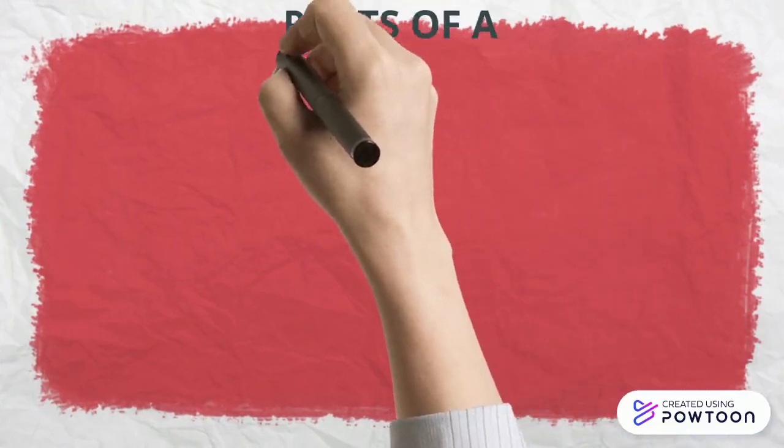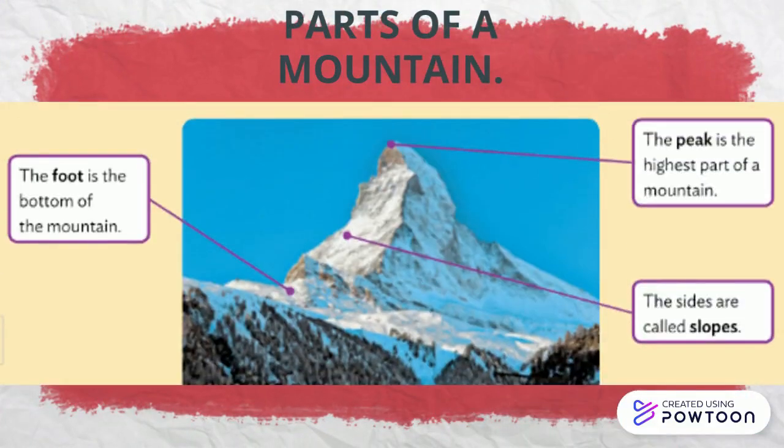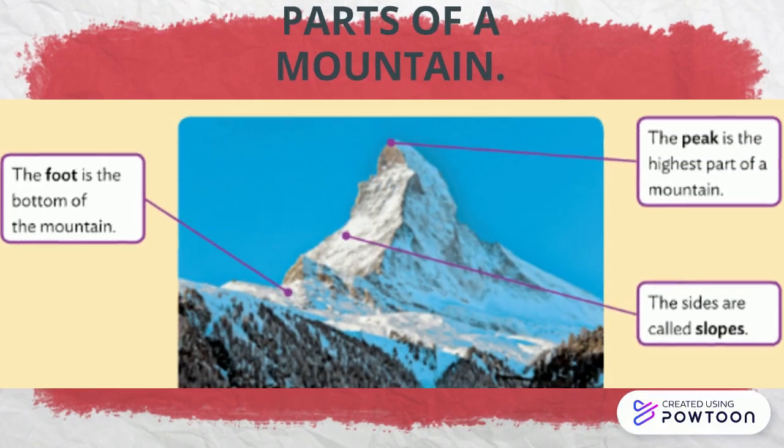Now we are going to learn the parts of a mountain. The foot is the bottom of the mountain. The sides are called slopes, and the peak is the highest part of a mountain. So remember: foot, slopes, and peak.